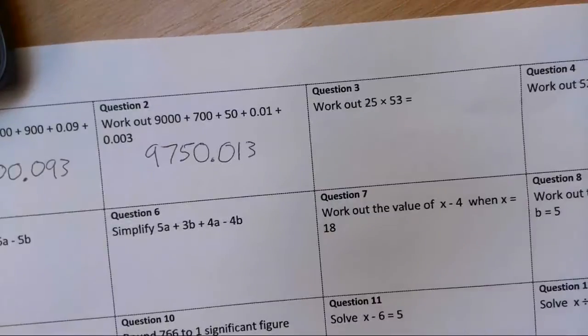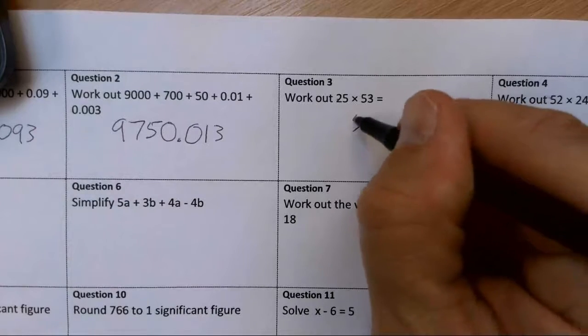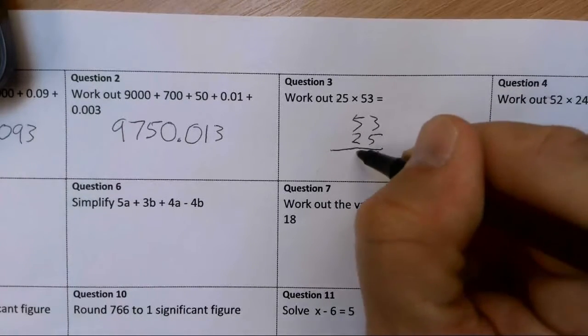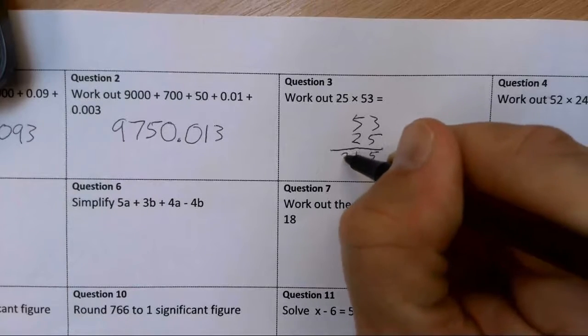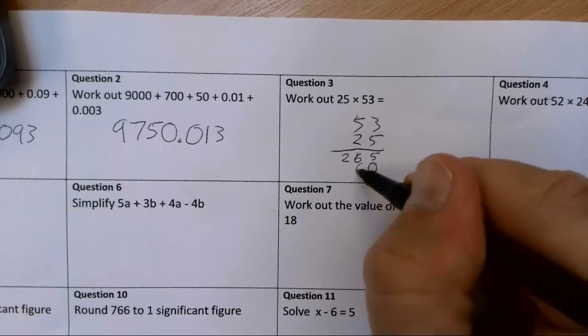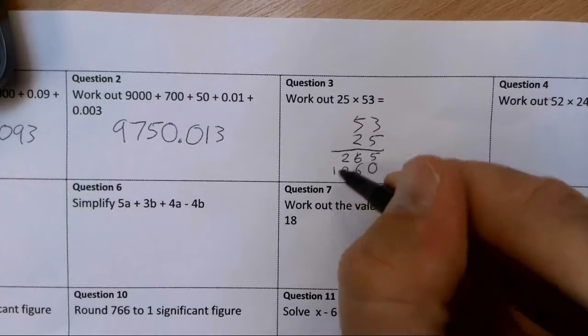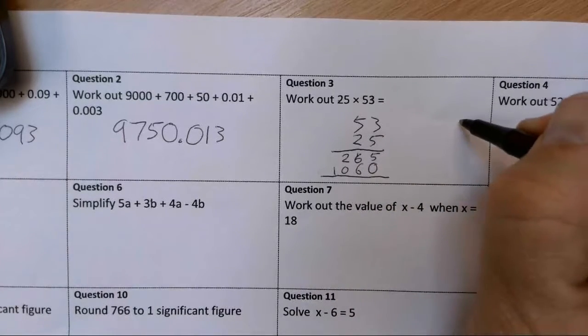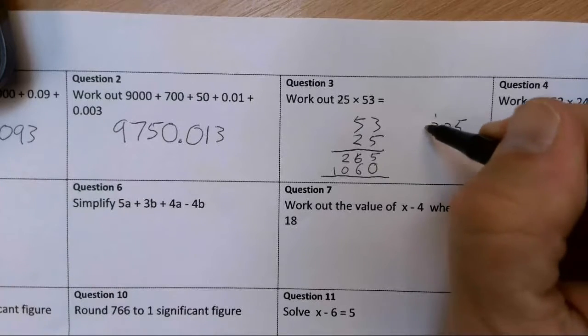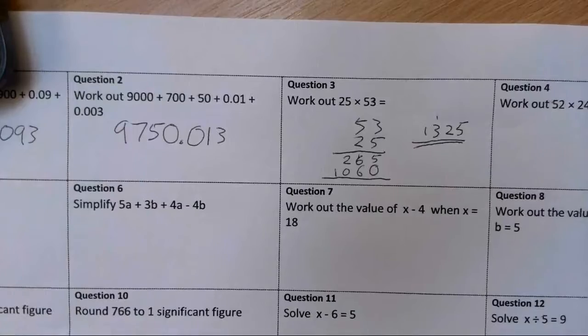25 times 53, quick multiplication. 53, 25. 5 times 3 is 15, 5 times 5 is 25, plus 1, 26. 0. 2 times 3 is 6, 2 times 5 is 10. Add it up, we get 5, 2 carry the 1, 3, 1. 1325.